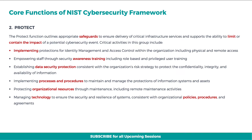The next function is Protect. The protect function outlines appropriate safeguards to ensure delivery of critical infrastructure services, and supports the ability to limit or contain the impact of a potential cybersecurity event. Critical activities in this group include: implementing protections for identity management and access control within the organization, including physical and remote access; empowering staff through security awareness training including role-based and privileged user training; establishing data security protection consistent with the organization's risk strategy to protect the confidentiality, integrity, and availability of information; implementing processes and procedures to maintain and manage the protections of information systems and assets; protecting organizational resources through maintenance, including remote maintenance activities; and managing technology to ensure the security and resilience of systems, consistent with organizational policies, procedures, and agreements.